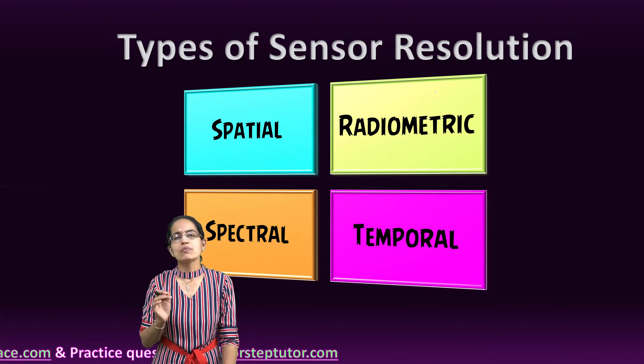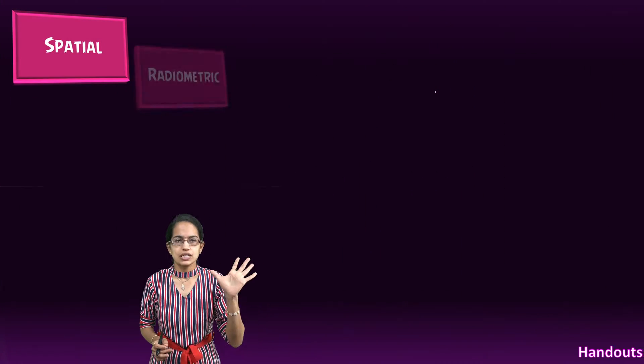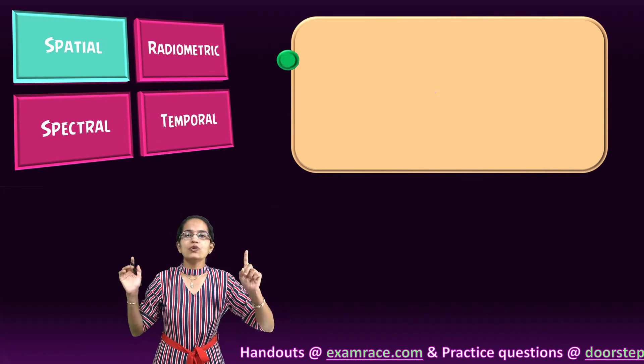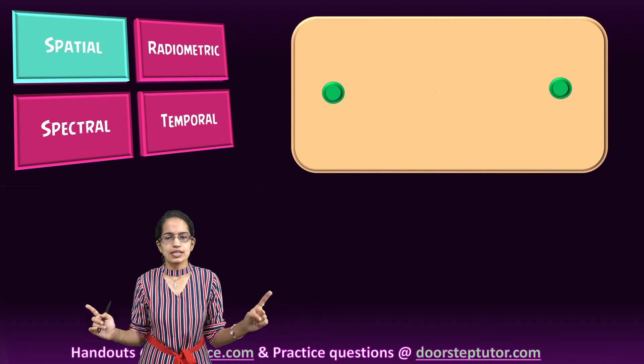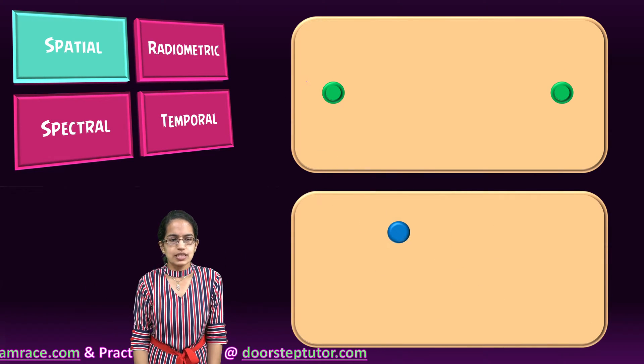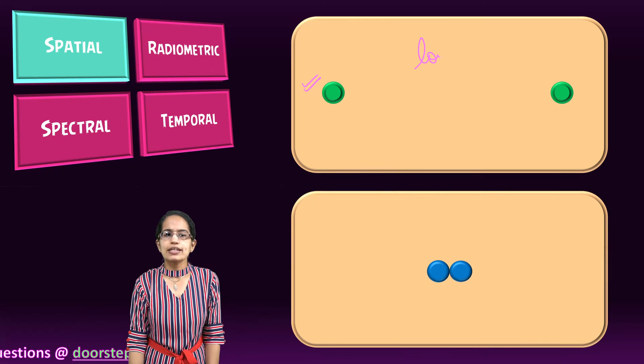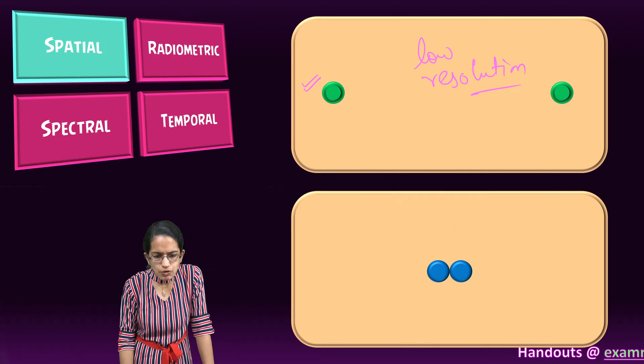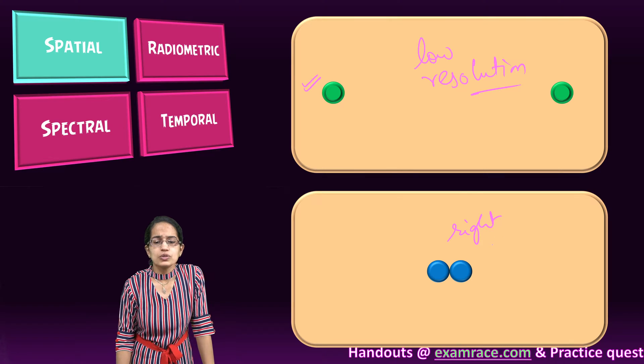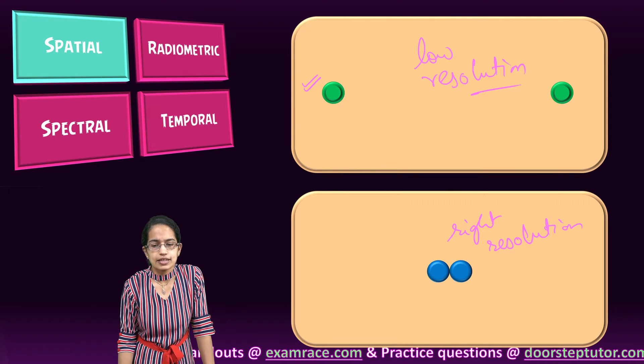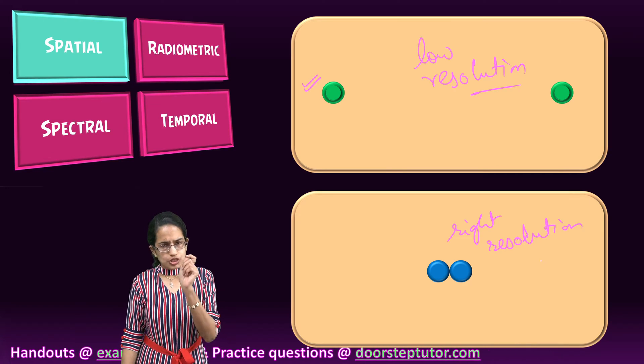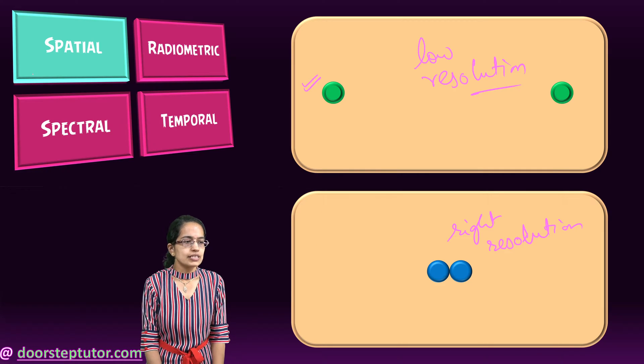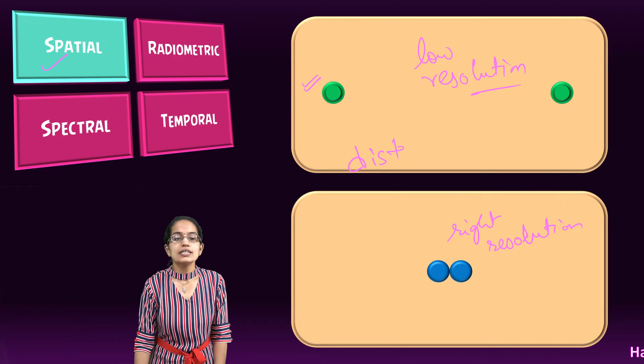Let's first talk about the most simplest of those, and that is spatial resolution. Spatial resolution is simply put a resolution where I am trying to identify two objects how far apart they are. So there are two buttons as you can see here and they are far apart, so I require a really low resolution satellite to identify the distance between the two. However, when the two buttons are very close, I require a high resolution sensor to identify whether they are actually close or apart. And this is where we understand spatial - what matters is the distance.